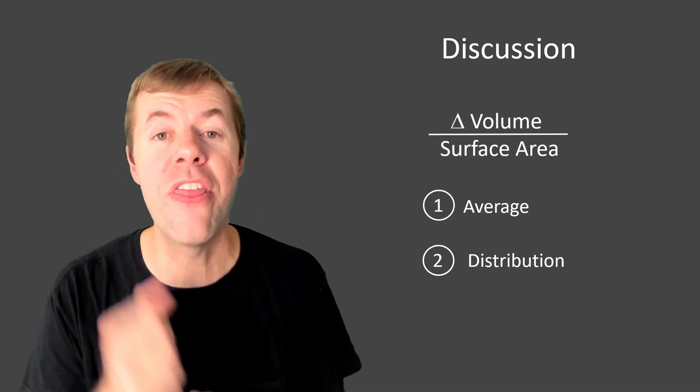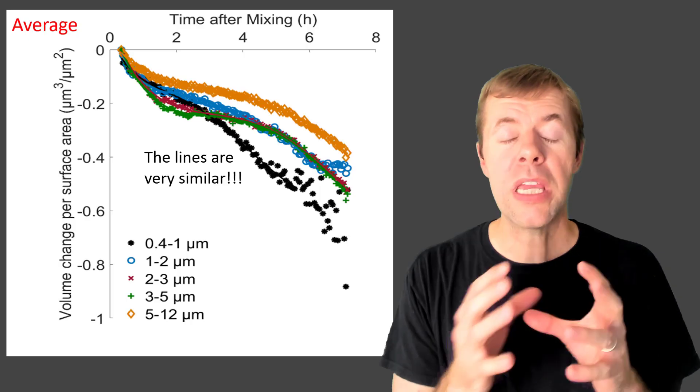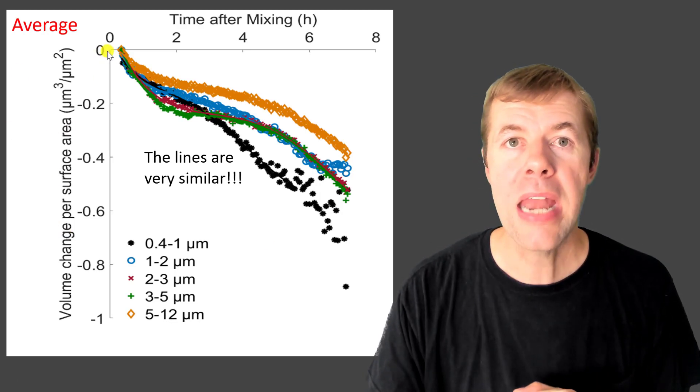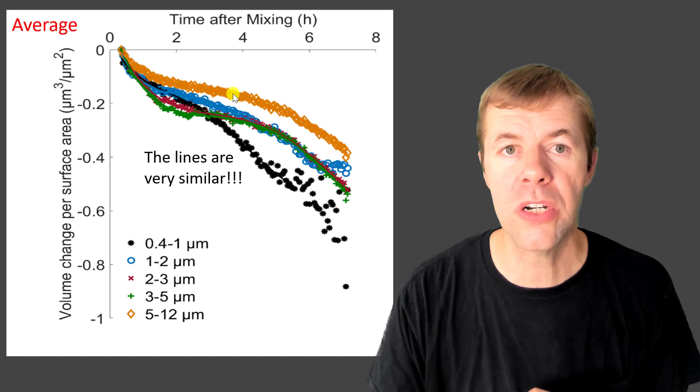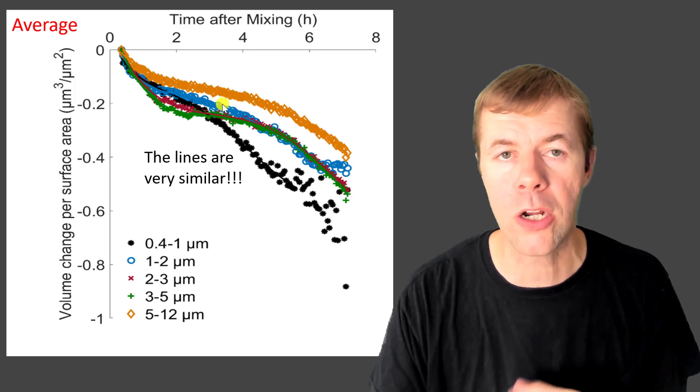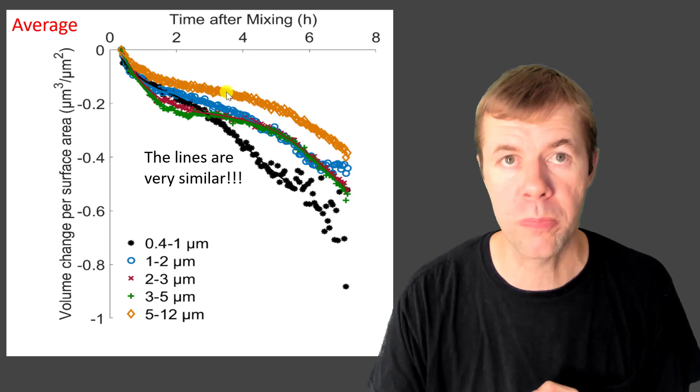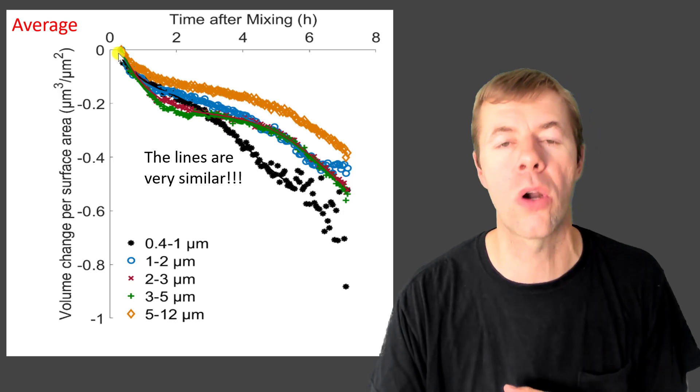First, we're going to look at the average and then the distribution. Now, here is the volume change per surface area. And here is time. And every single different set of colors here is a different size particles. The black are the smallest particles. And the orange are the larger size particles. But look how similar these lines are to one another.